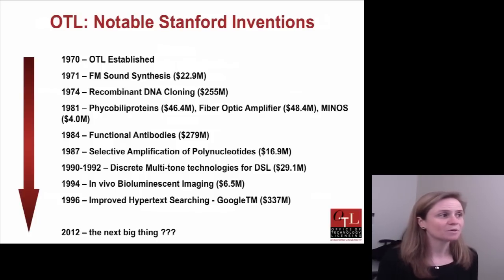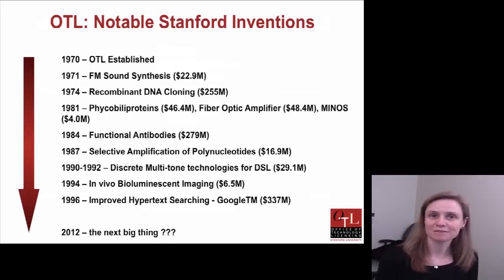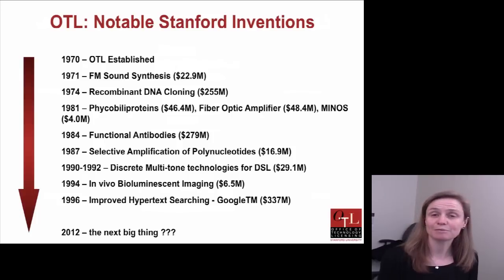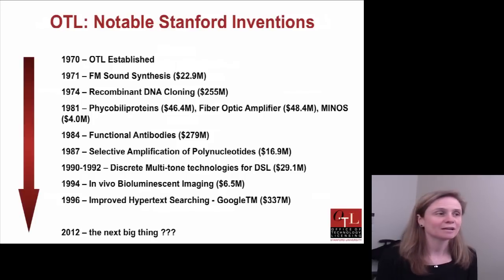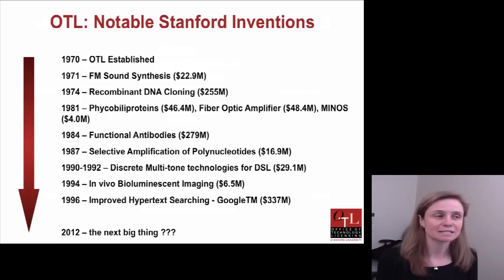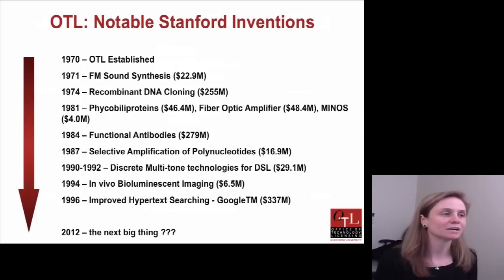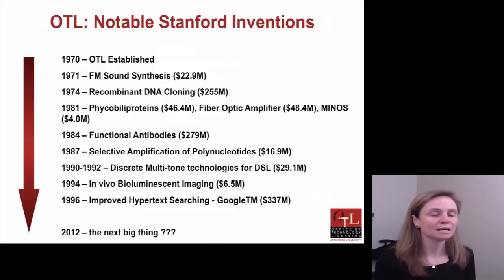In 1981, there are a number of technologies in different areas: Ficobili proteins from the life sciences area; fiber optic amplifiers, which came from a long program with Litton — now Northrop Grumman; and Minos, a software program we still have a lot of licenses to. A lot of different technologies just from that one year have generated significant income for the university.